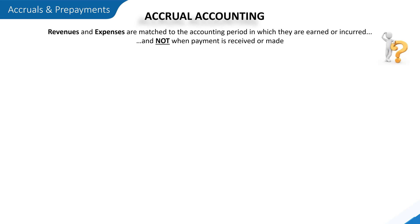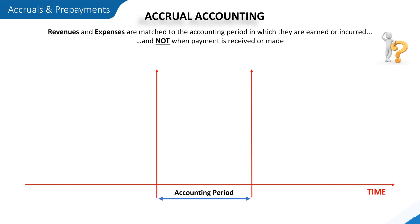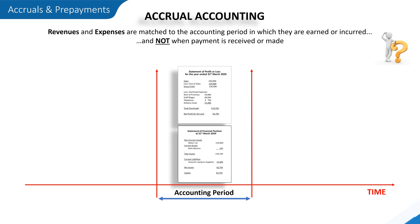You might ask why this is important. Well, it's all about timing. Each financial year a business must produce a statement of profit or loss, or SPL, which records the income earned and expenses incurred within that business's accounting period. Businesses must also produce a statement of financial position, or SFP, which records its assets, liabilities and capital within that same period.